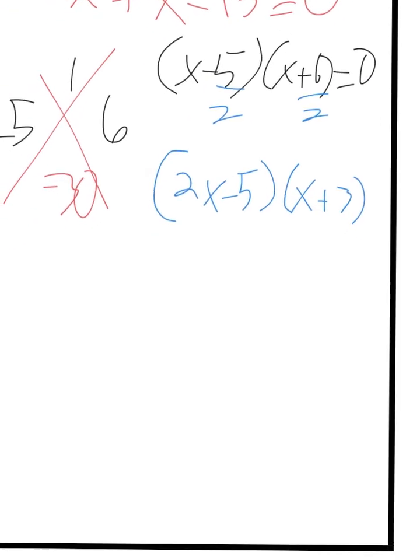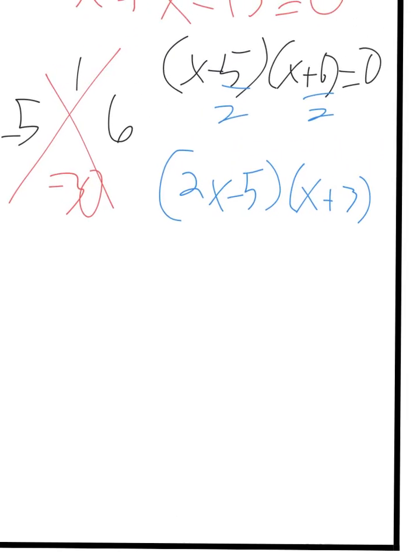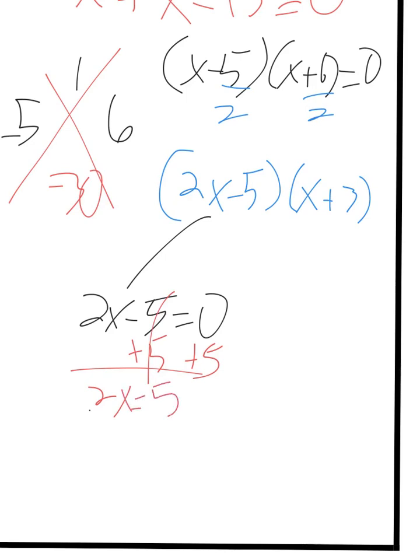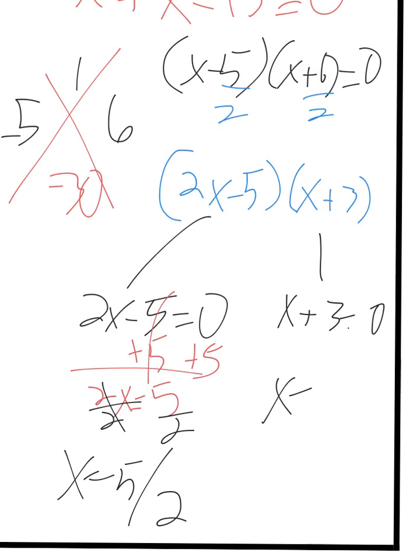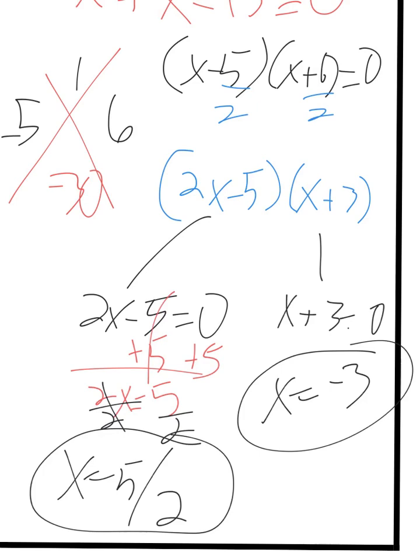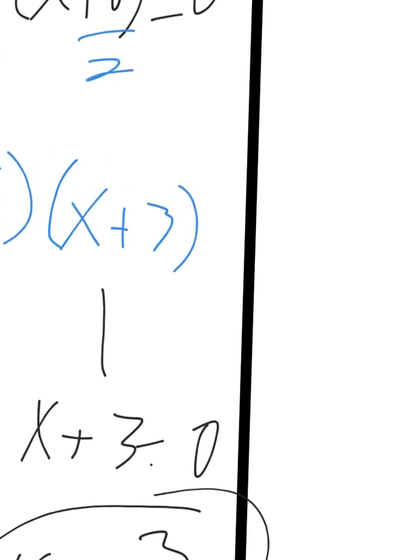And then, you just set each of them equal to 0. So, you have 2x minus 5 equals 0. And, honestly, this one you can just do by looking at the previous step. x minus 5 over 2. That would be positive 5 over 2. So, look. Let me show you the work. Add 5. Okay. 2x equals 5. Divide by 2. Divide by 2. x equals 5 over 2, or 2.5. And then, x plus 3 equals 0. x is going to equal negative 3. That one's pretty easy, because negative 3 plus 3 is 0. So, negative 3 and 5 over 2. I guess I forgot to write equal 0 on this one. But, yeah, equals 0 right here. That's going to wrap up the notes.